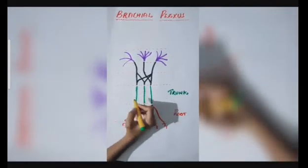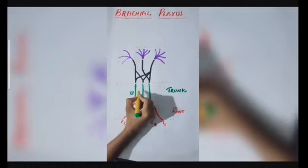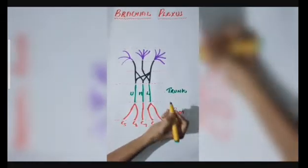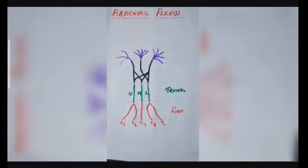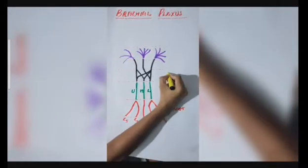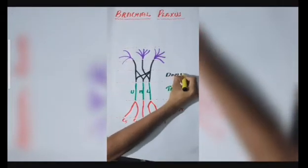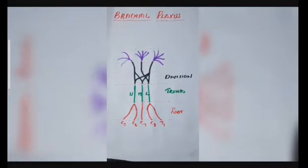The C5-C6 nerve root joined to form the upper trunk. The C7 makes the middle trunk and finally the C8-T1 combined to form the lower trunk.